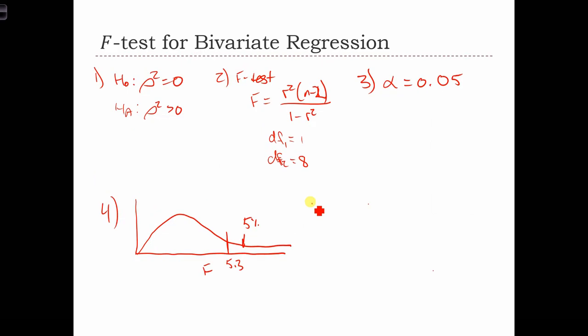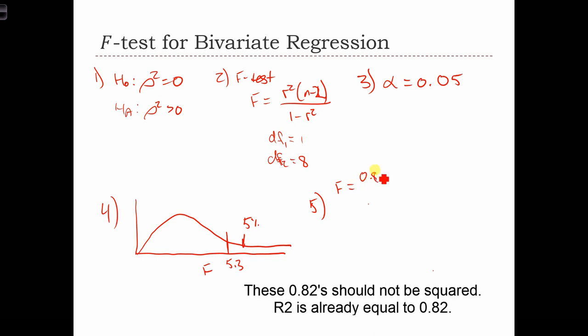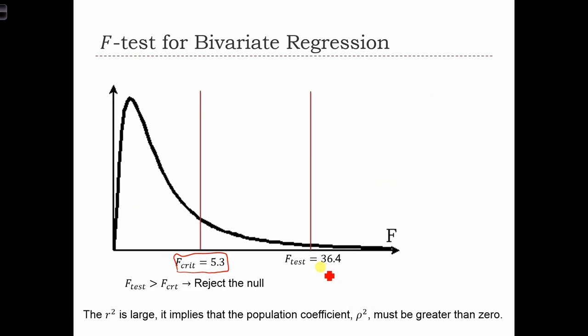Next, we need to compute F. So F equals r squared, so 0.82 squared times n minus 2 over 1 minus 0.82 squared. And we're going to cheat the math and see, I've already computed it. It's equal to 36.4.